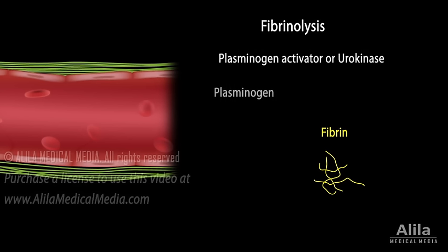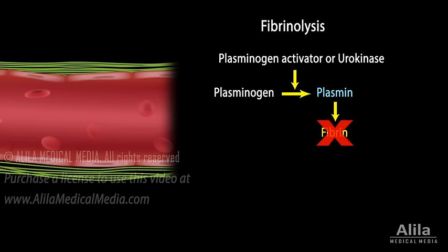Blood clots prevent blood loss during wound healing, but once the vessels are repaired, they must be dissolved to restore blood flow. This process, called fibrinolysis, is a small cascade that produces the enzyme plasmin. Plasmin cleaves fibrin and dissolves the clot.